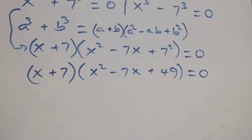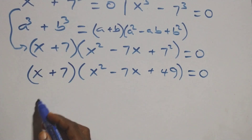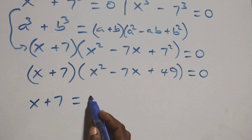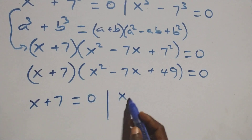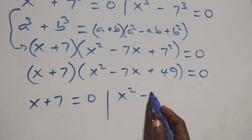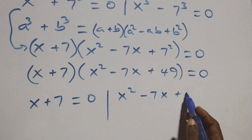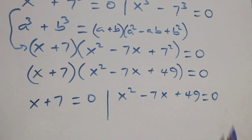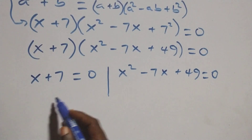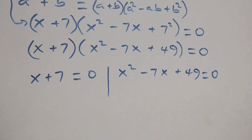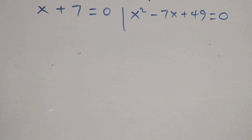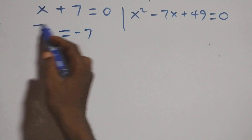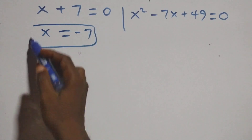Then we have two possible cases here. Solving, this gives us x equals to minus 7, which is one solution.